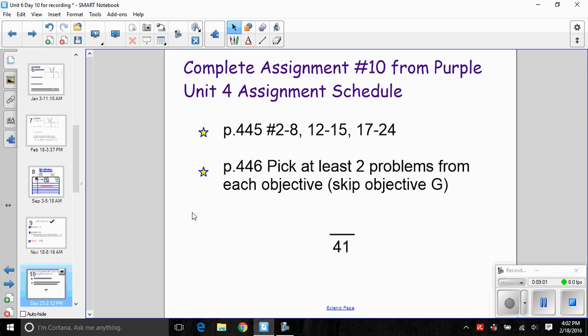Now you're going to have an opportunity to work individually or quietly with one other classmate to complete assignment number 10 from the purple sheet. This is your review assignment. You're going to complete all of the page 445 exercises that we've outlined: 2 through 8, 12 to 15, 17 to 24. And then with the chapter review, the 446 exercises, it's going to be your choice to tailor your review based on your individual strengths and weaknesses.